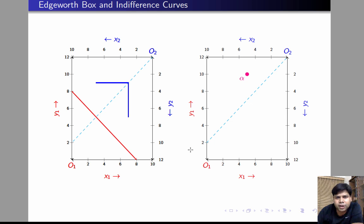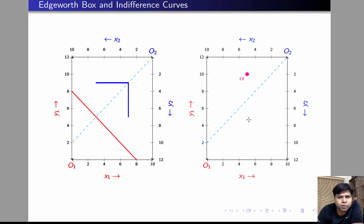Now given the way the entire Edgeworth box looks and given the way the preferences are, we are going to divide this problem into three regions: one is the region above the 45-degree line, one is the region below the 45-degree line, and one is the points on the 45-degree line through the origin of individual 2.